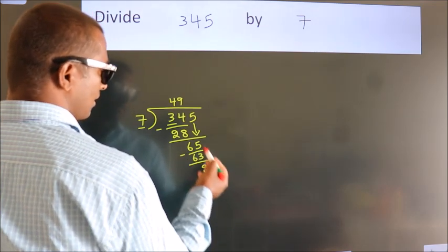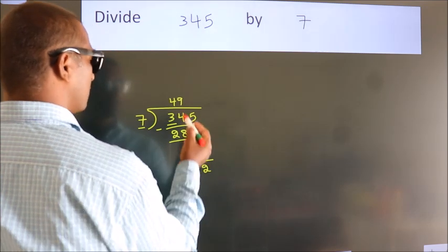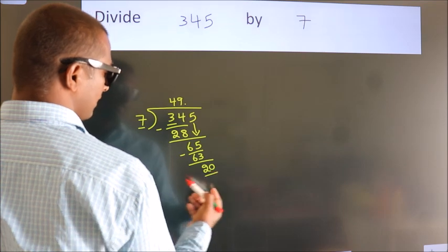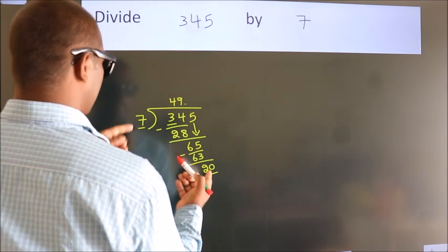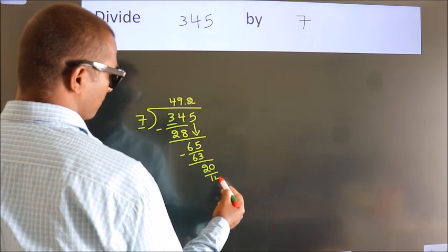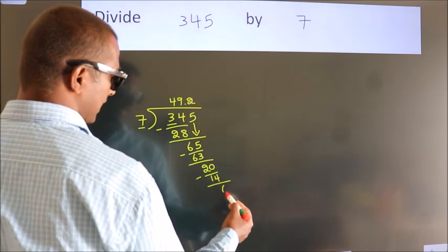After this, no more numbers to bring down. So what we do is we put a dot and take 0, so 20. A number close to 20 in the 7 table is 7 twos, 14. Now we subtract. We get 6.